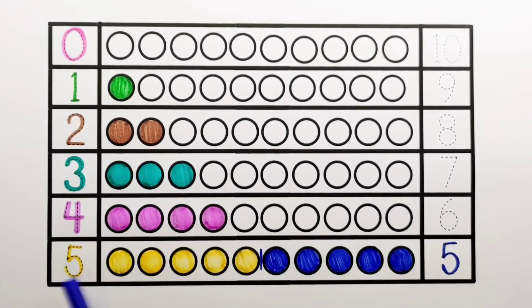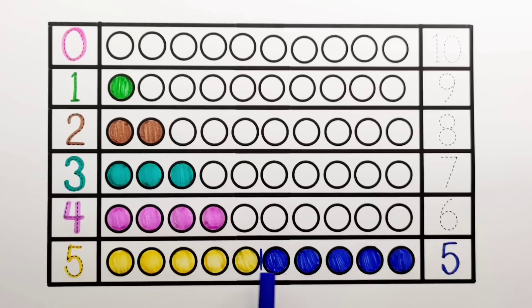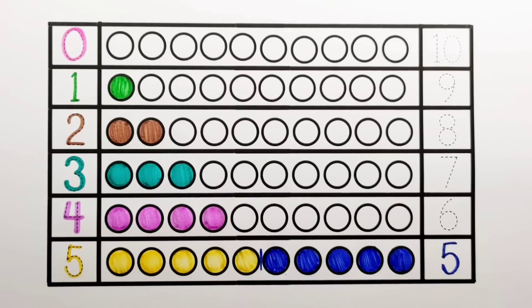5 and 5 makes 10. 1, 2, 3, 4, 5, 6, 7, 8, 9, 10. 5 plus 5 equals 10.